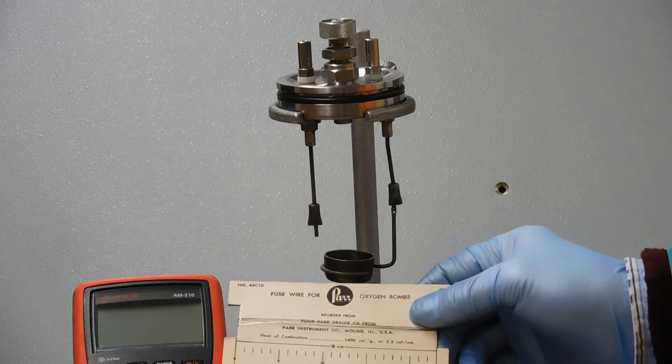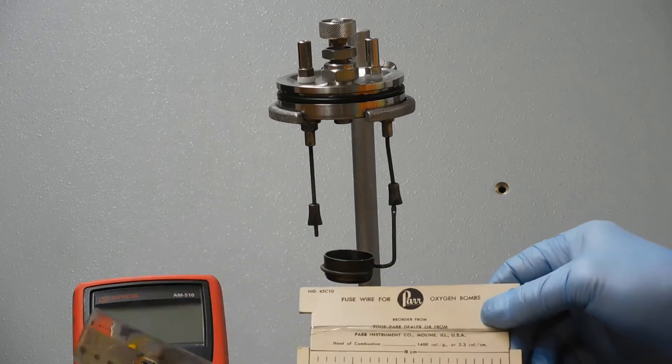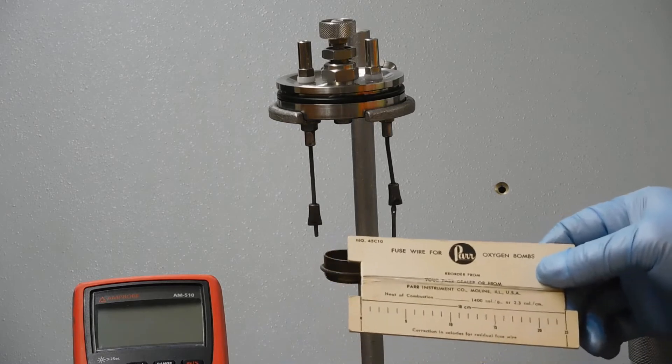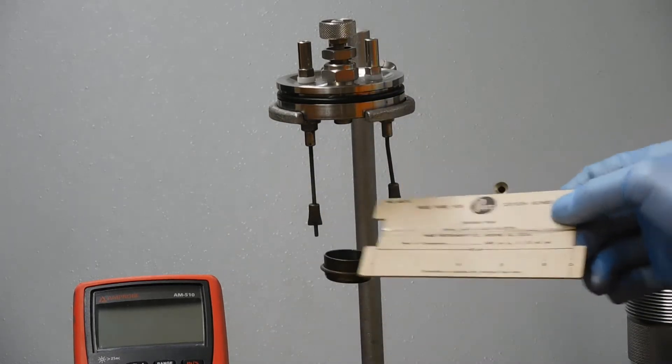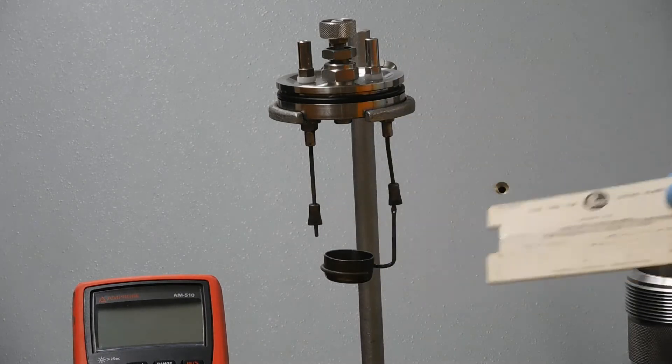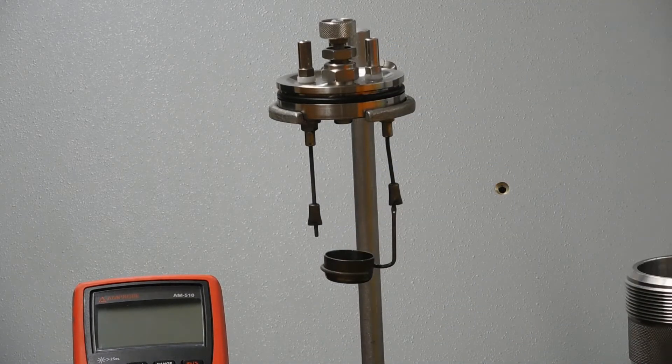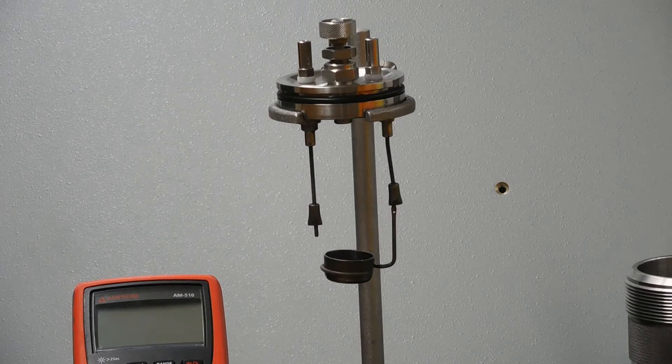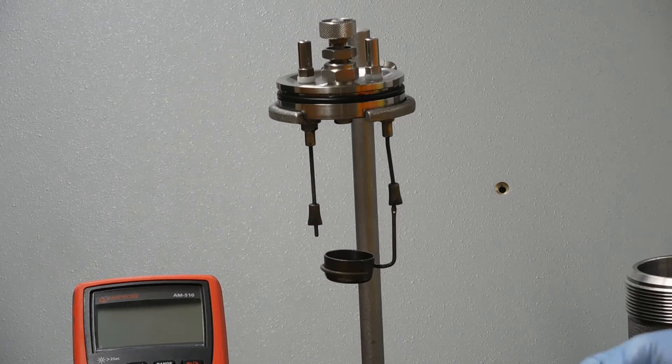You'll take this wire and measure it with a ruler, 10 centimeters of it, and cut a 10 centimeter piece off. Once you've got that 10 centimeter piece, you have to connect it properly to this holder so that the wire contacts both the electrical contacts and the sample you want to light on fire, the little pellet.